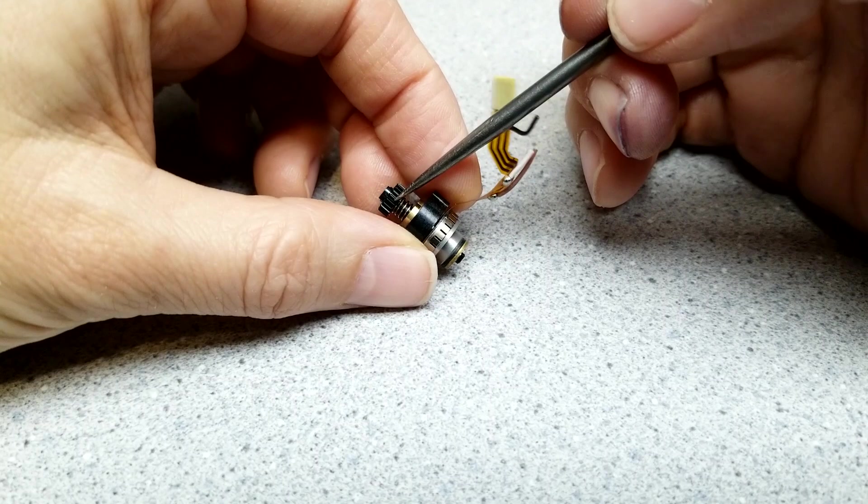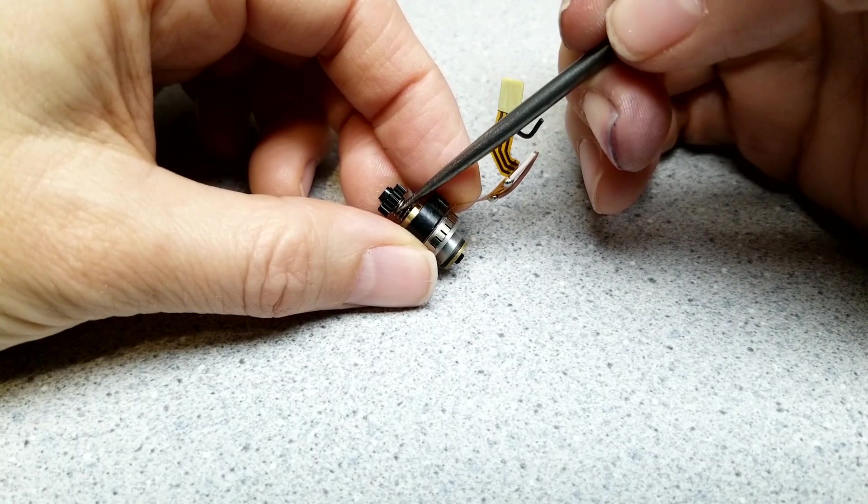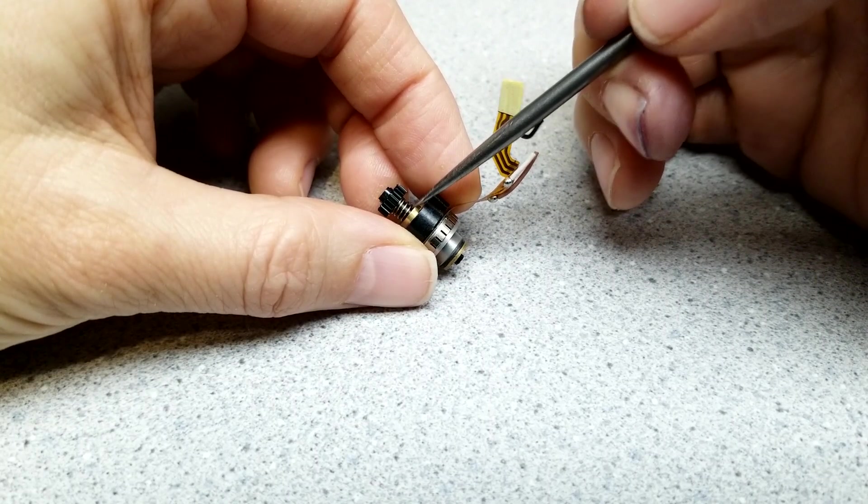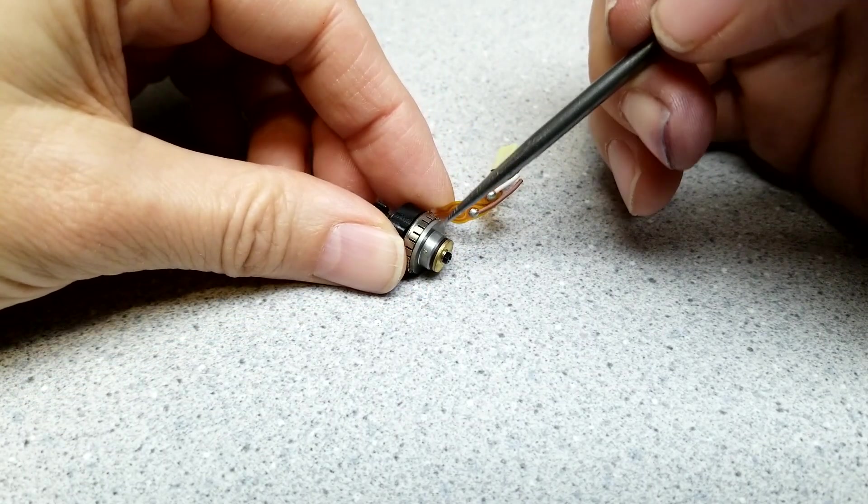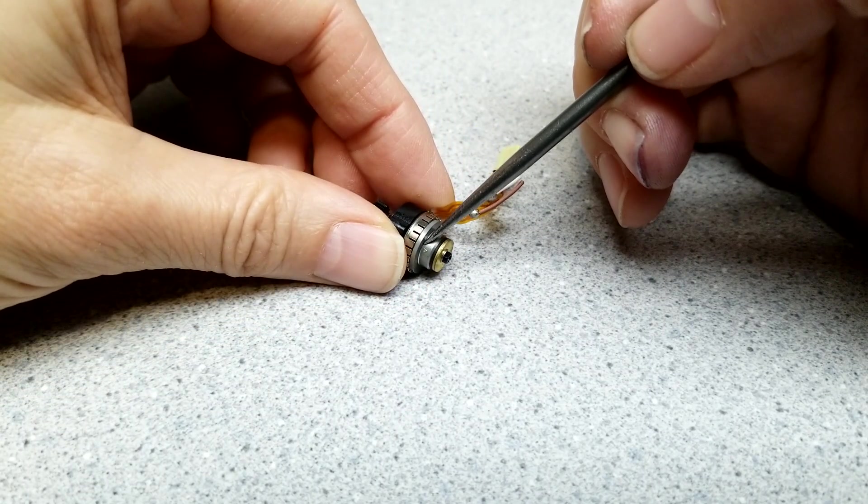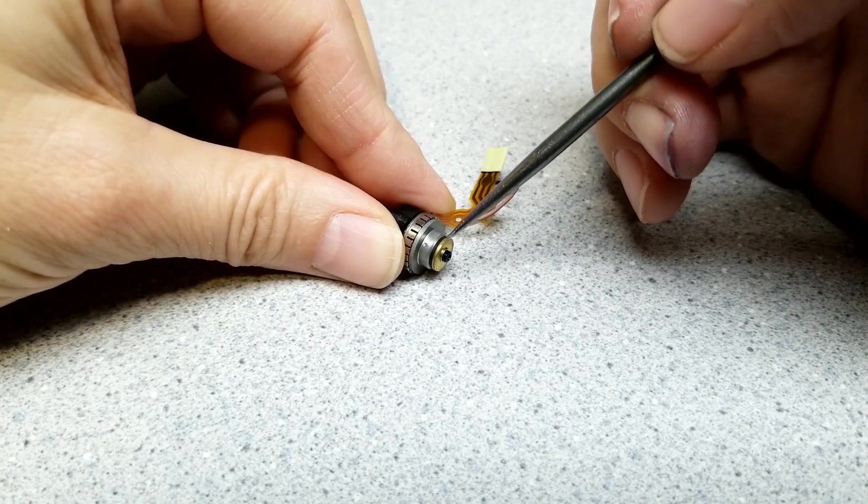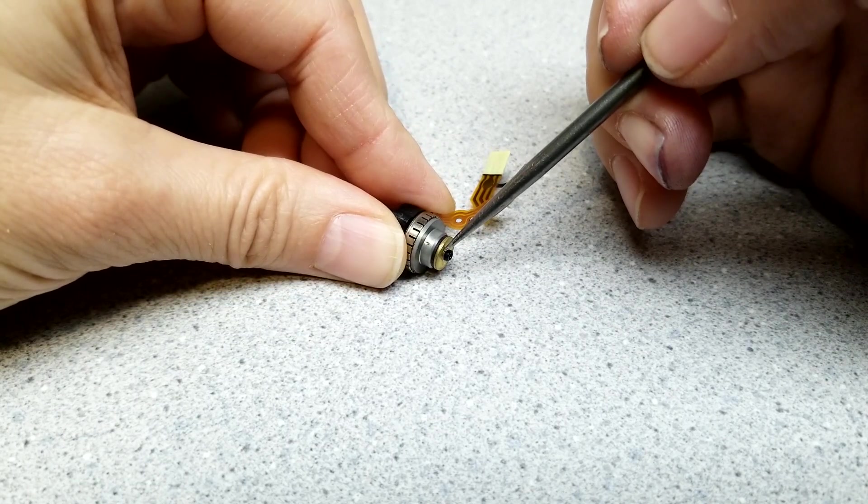Looking at the outside of the motor, we have a shaft here, a little spring, a little brass tube that goes through the motor body. We have, I believe, the stator here, and these two parts make up the rotor. And then we have a little washer and a little clip here.